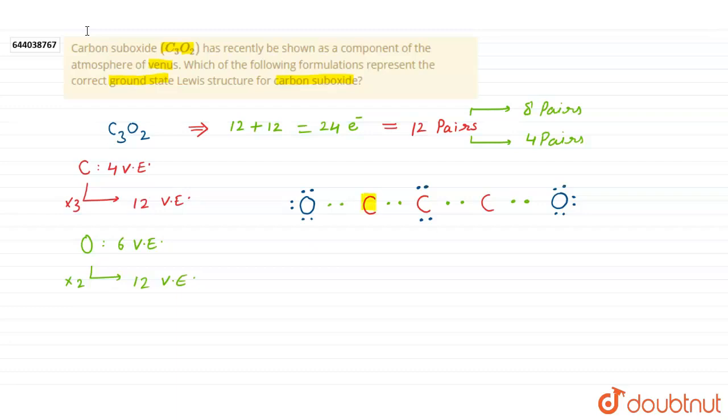That's why this lone pair will shift here, and here also this lone pair will shift here. The first structure was a rough structure. In the second structure we get this improved structure.